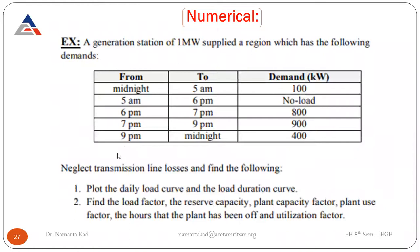Now the numerical portion. A generating station of one megawatt installed capacity supplied a region with the following demands: midnight to 5am — 100 kW; 5am to 6pm — no load; 6pm to 7pm — 800 kW; 7pm to 9pm — 900 kW; 9pm to midnight — 400 kW. Neglecting transmission losses, we must draw the daily load curve, load duration curve, and calculate load factor, reserve capacity, capacity factor, plant use factor, hours the plant was off, and utilization factor.